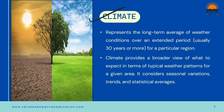Climate is the long-term average of weather conditions over an extended period of time. So weather is a short-term phenomenon of a particular place at a particular point of time, but climate represents the long-term average of weather conditions. This extended period is almost 30 to 35 years of weather conditions averaged together - we call that the climate.